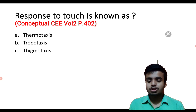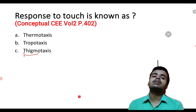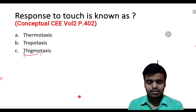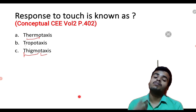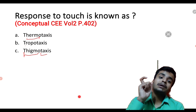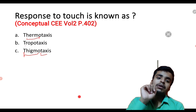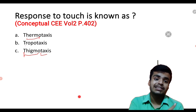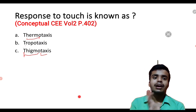Response to touch is known as Thigmotaxis — a negative taxes response to touch. Also review from animal adaptation and behavior chapter: Trophotaxis, Telotaxis, Klinotaxis, and Thigmotaxis.